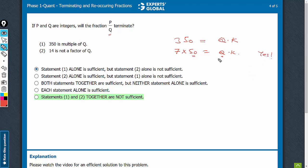P by Q will terminate and if Q has a 7 in it, then the answer can be no. So yes and no, both are possible. Therefore, statement 1 is not sufficient.